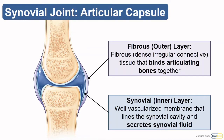The articular capsule is made up of two layers. The outer fibrous layer binds the bones together, and the inner synovial layer lines the synovial cavity and secretes synovial fluid. The fibrous layer is the structural layer, and it can be reinforced by thickenings or replaced fully by tendons, like we see in the knee.